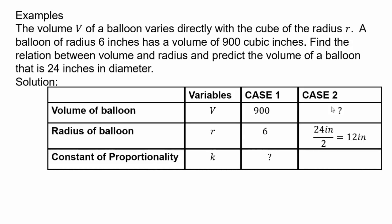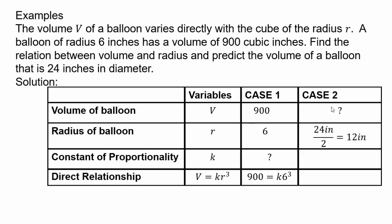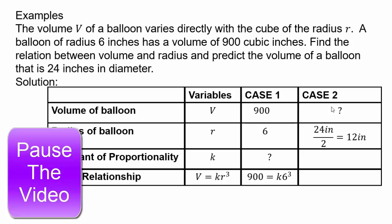Constant of proportionality, let's call that k. You can use some other variable. In the first case, we don't know. And in the second case, we need to find the volume. So that's why the question mark in the volume. The reason there are two cases is because the first case allows you to find the value of k. You're going to use that value of k in the second case so you can solve for the volume. So we need one more row for the relationship between them. So the direct relationship means that volume equals some constant multiple of r cubed. So k is our constant. So since 900 is our volume in case 1, equals k times 6 cubed because 6 is the radius. So we need to solve that equation. 900 equals k times 6 cubed. Once you get that k, we'll continue. So go ahead. Pause the video. Find the value of k.